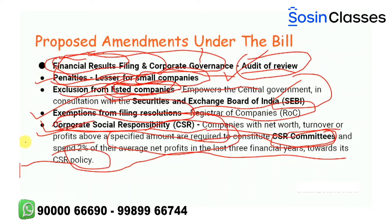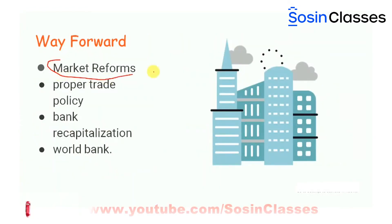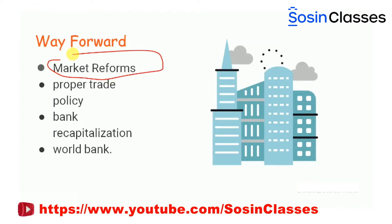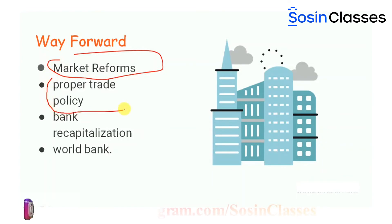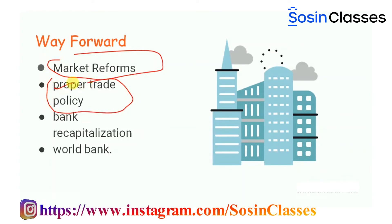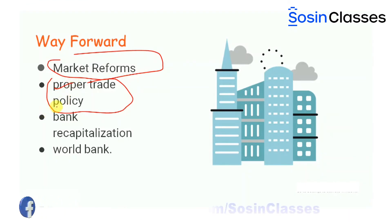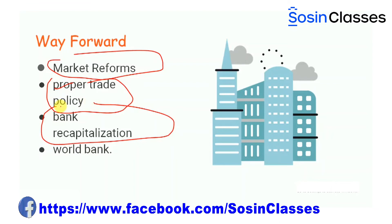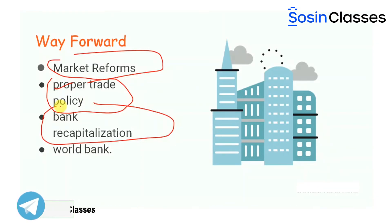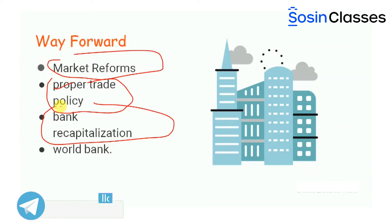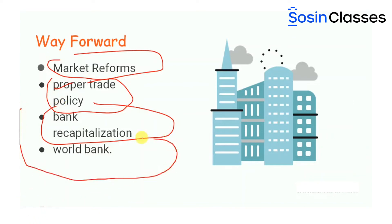Coming to the way forward: market reforms — the availability of land and labour reforms need to be worked at. There is a need for a proper trade policy for enhancement of business opportunities. On bank recapitalization: banks are stressed and the corporate sector is over-leveraged. Though bank recapitalization was a first good step, it must be followed up with changes in how banks do their business. Lastly, issues with the ease of doing business index itself need to be looked at at the level of the World Bank. That's about it with respect to the Companies Amendment Bill 2020.